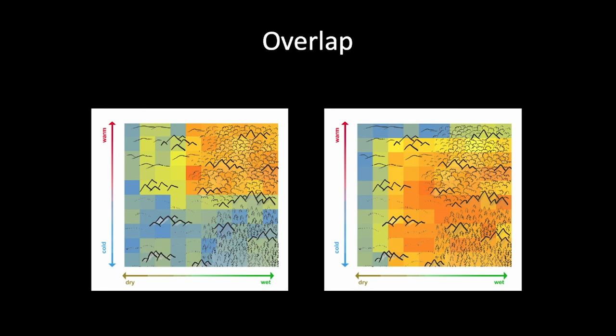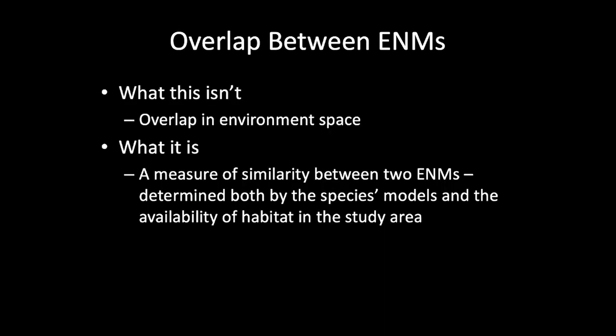It's worth thinking about what this isn't. This is a measure of the overlap or similarity in geographic distributions of estimated habitat suitabilities for two species — not overlap in environment space. This is not the same thing as saying their fundamental niches overlap by this much. It's essentially the fundamental niche filtered through the suite of available environments, to the extent that you think the model estimates the fundamental niche. It's really more about species' ability to interact within a given distribution of available environments than about the fundamental niche.